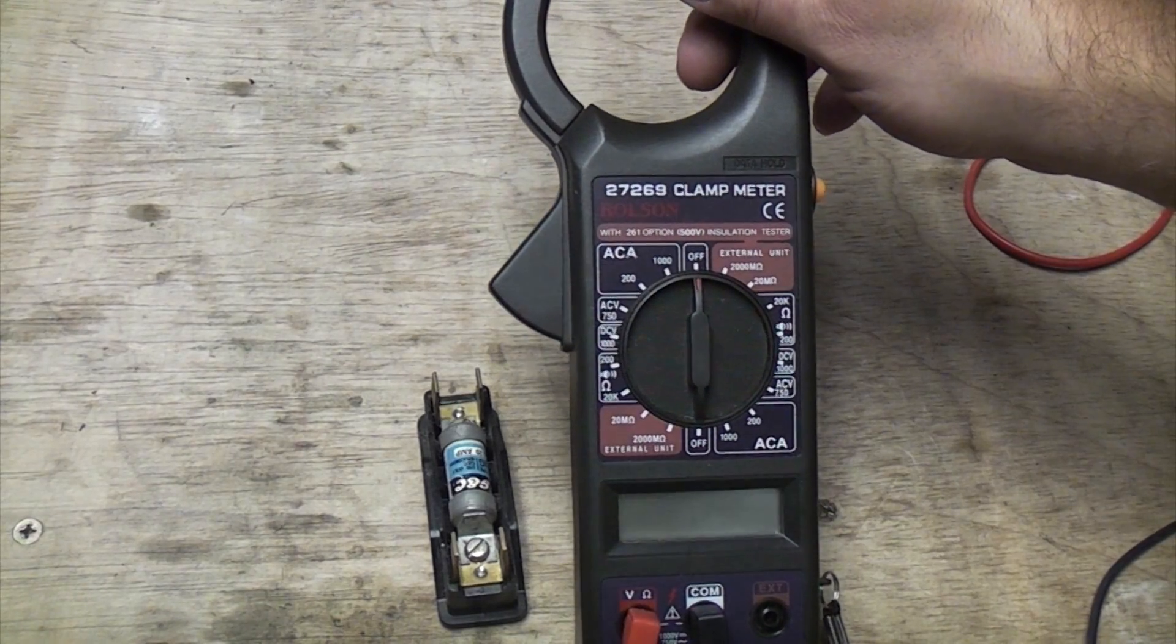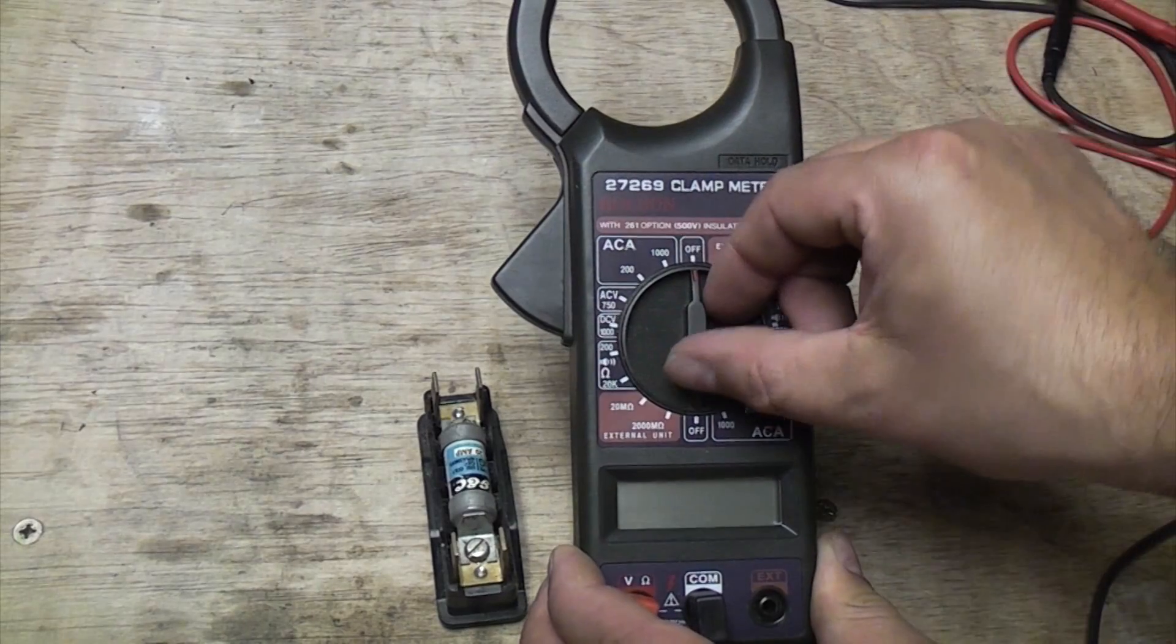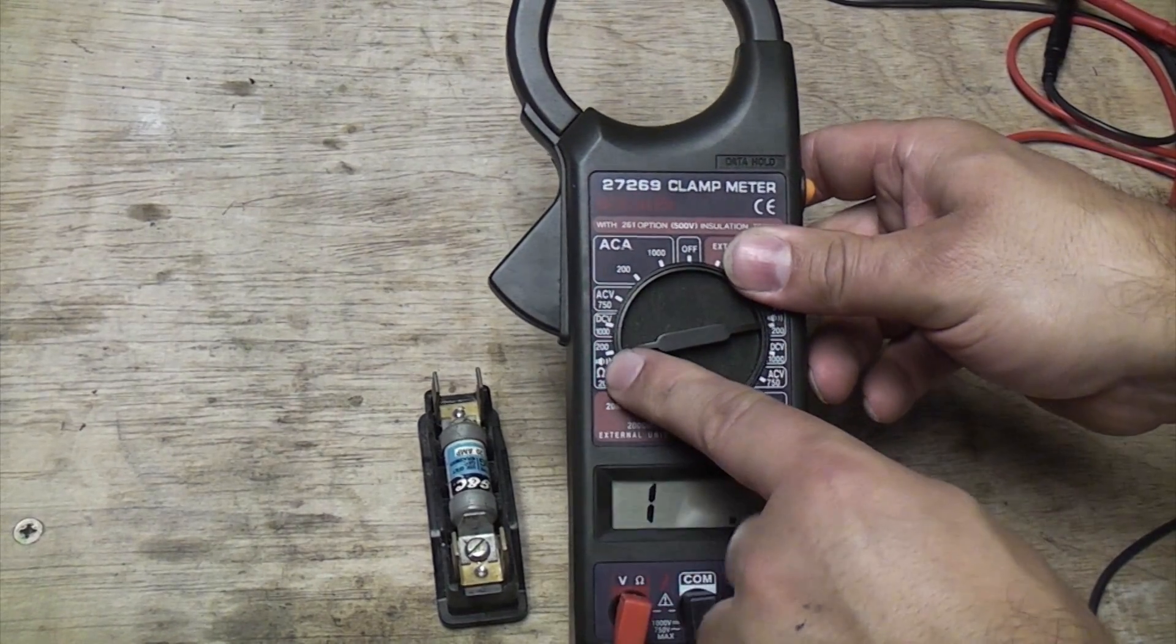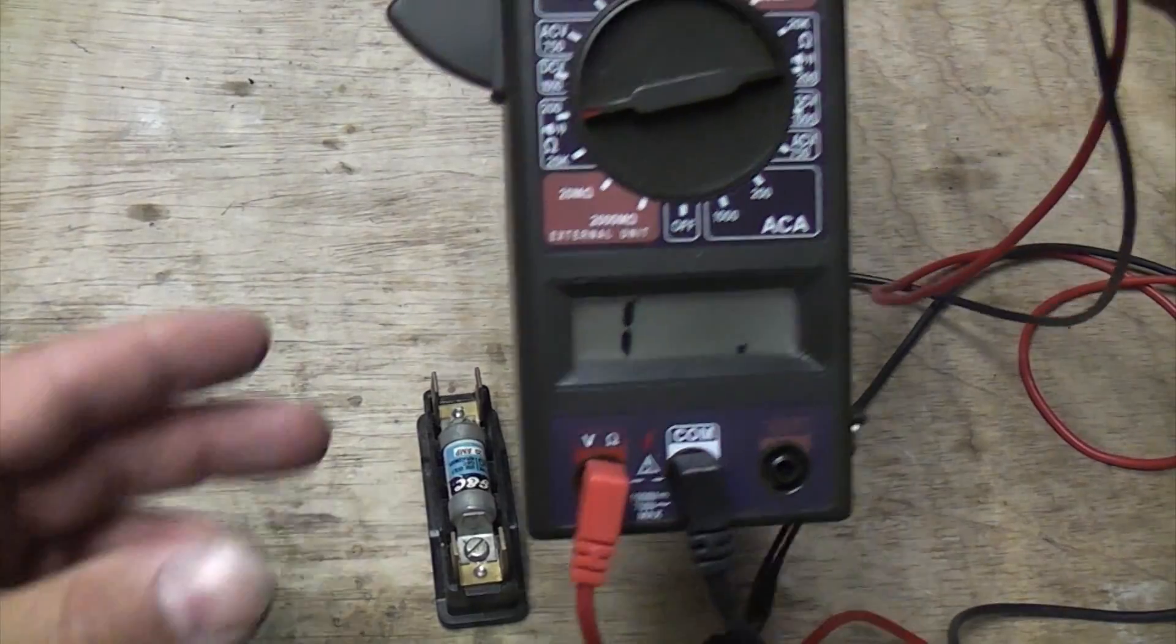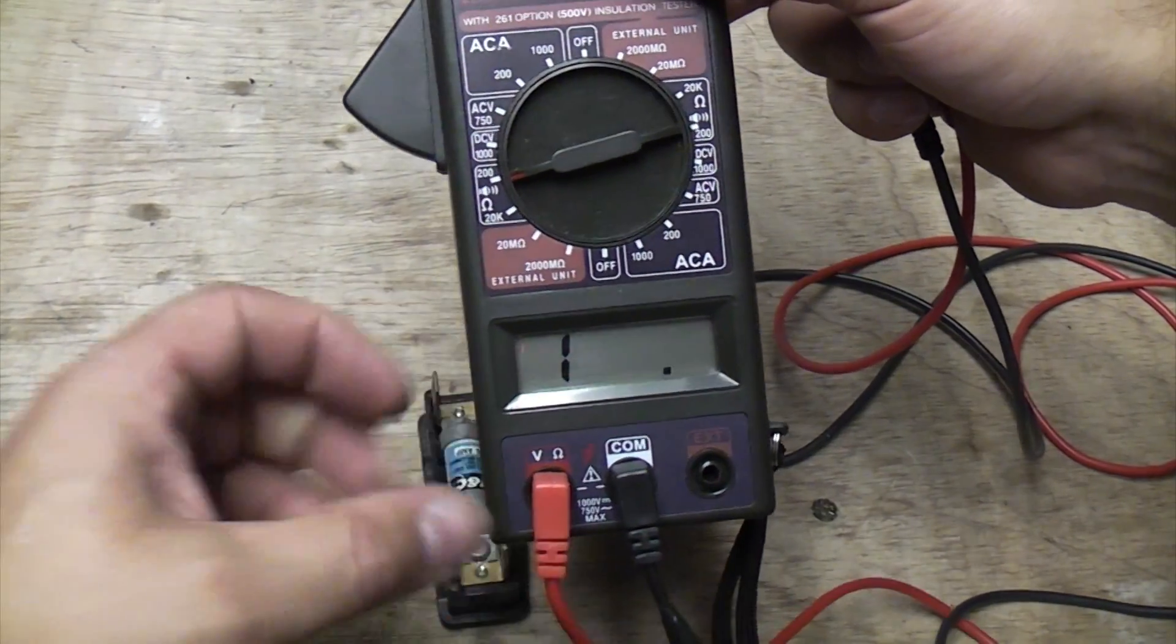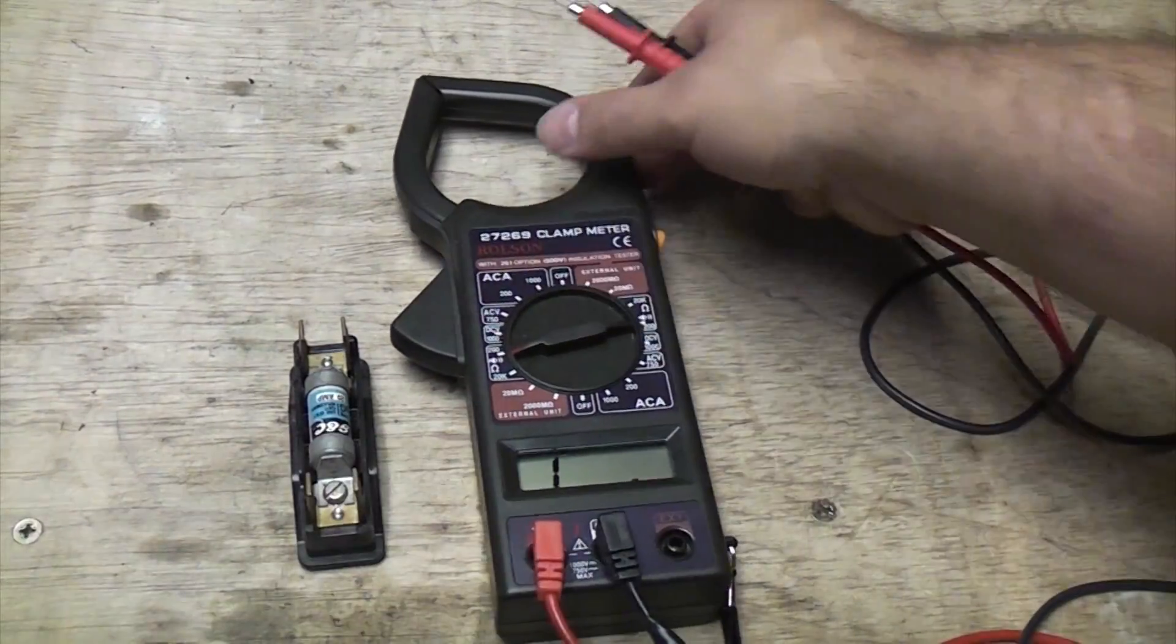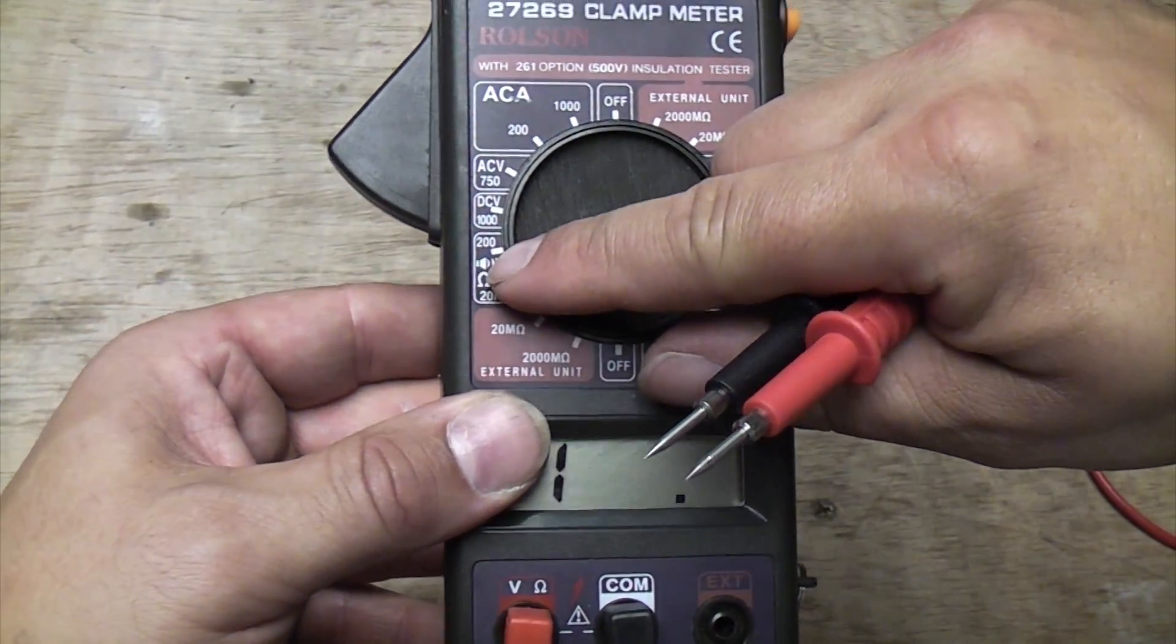One of the most useful tests you can do with a multimeter is the continuity test, and that's also got a beep signal on it. So I've plugged the probes into the correct terminals. The black's in the COM and the red's in the V or the ohms. And I've now switched the multimeter onto continuity test with beep.